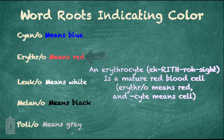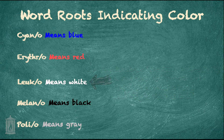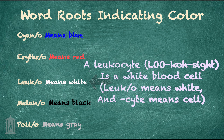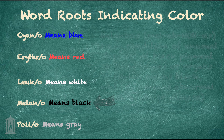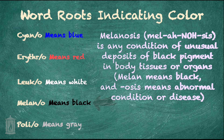For erythro, we have erythrocyte — a mature red blood cell. Erythro means red and -cyte means cell. For leuco, meaning white, we have leukocyte, which is a white blood cell. For melano, meaning black, we have melanosis, which is any condition of unusual deposits of black pigment in body tissues or organs. Melano means black and -osis means abnormal condition or disease.